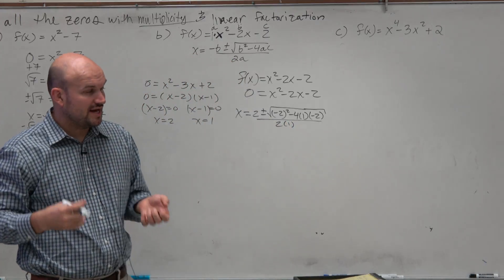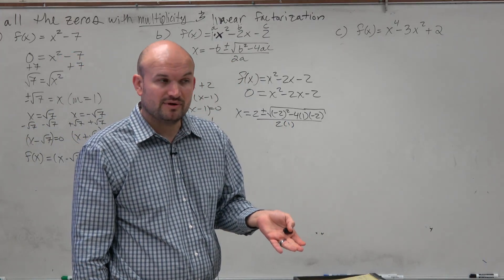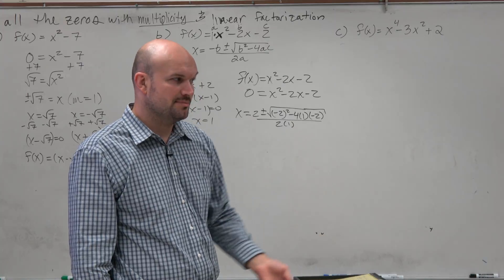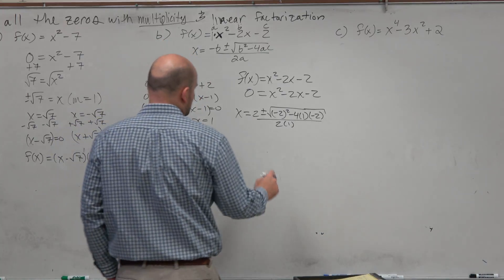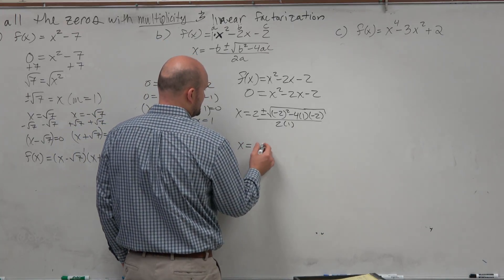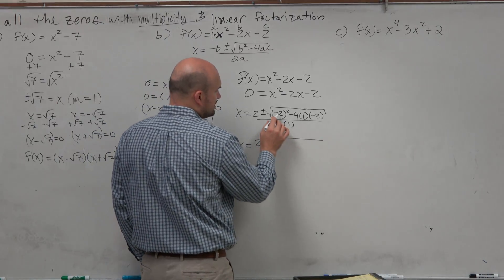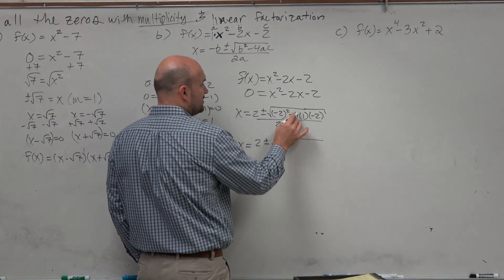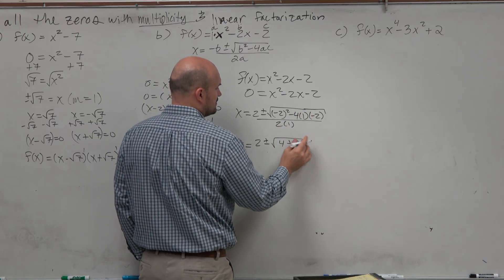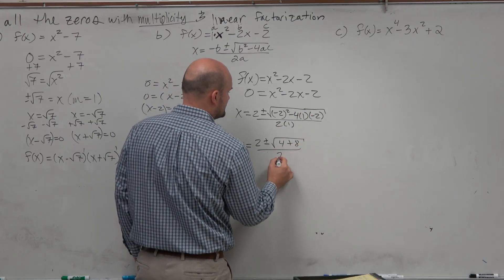Now most students don't usually have an issue with plugging it in, but we usually get to a problem with simplifying. So let's go ahead and simplify this result here. So I have 2 ± √((-2)² is 4, -4×1×(-2) is 8) all over 2.